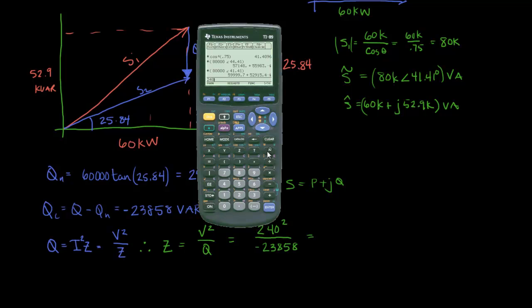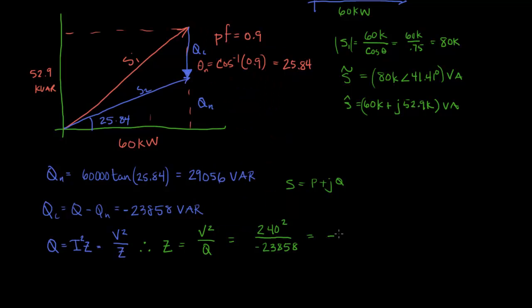240 squared divided by negative 23858. And it returns the value in an exact format. If I want to make it not do that, I can push the green button here and then re-evaluate. And so I get minus 2.41.